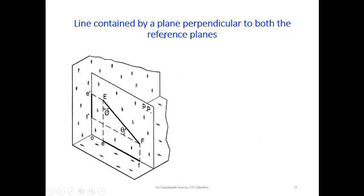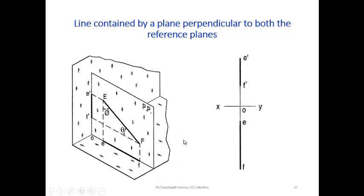Sometimes a straight line is contained in the profile plane — the auxiliary vertical plane which is 90 degrees to both the horizontal plane and vertical plane. Here theta is the angle to the horizontal plane and phi is the angle to the vertical plane. As per this geometry, it can be concluded that theta plus phi equals 90 degrees. The front view is a straight vertical line and the top view is also a straight vertical line, as per these projections.